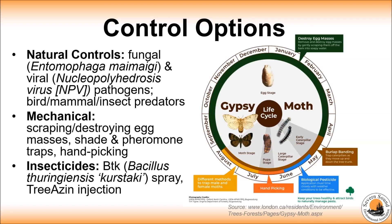As the population peaks, a viral and fungal outbreak may occur which can cause mass mortality in gypsy moths. NPV is often a very important factor in the collapse of outbreaks and has been observed causing mortality in the SSEA area in 2020. It spreads naturally, especially when the caterpillars are abundant because they are stressed from competition for food or space.